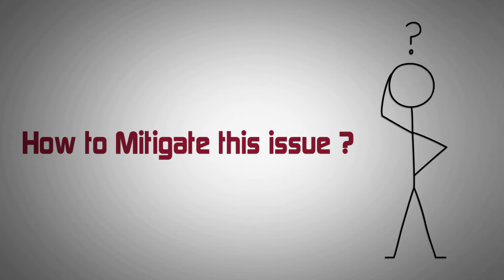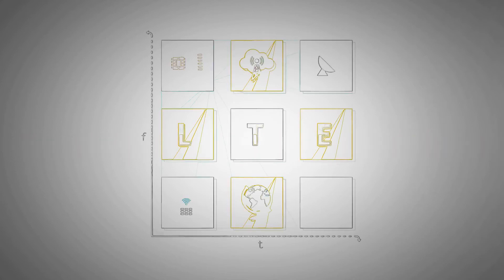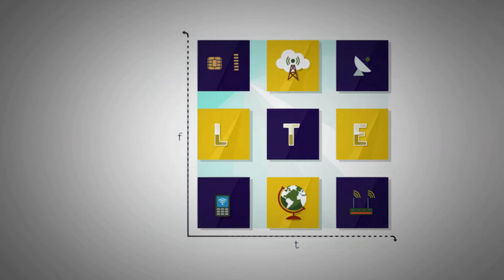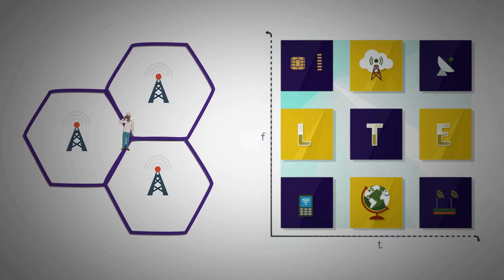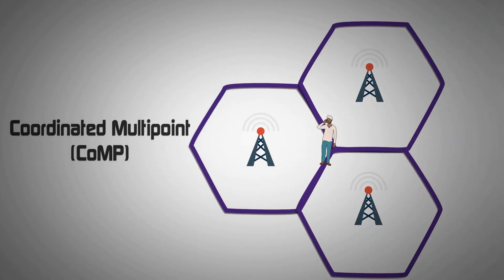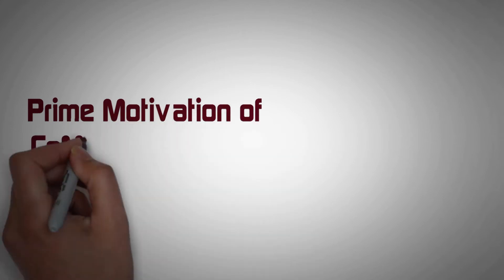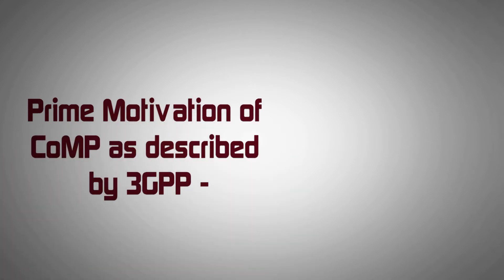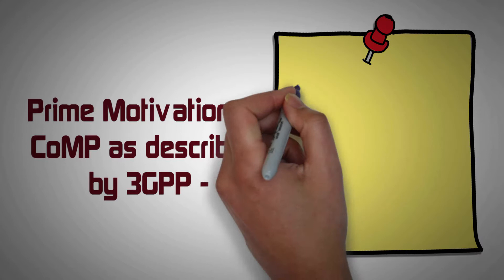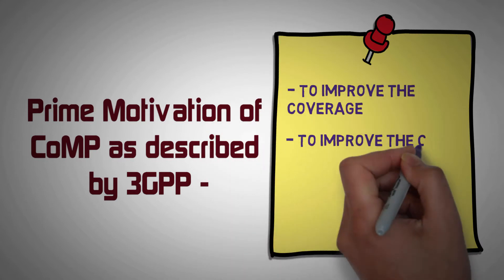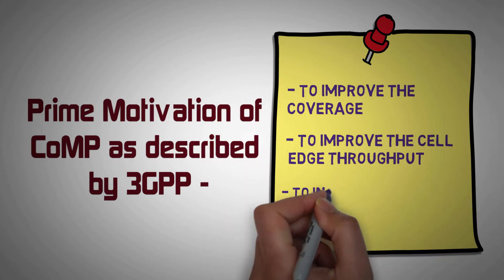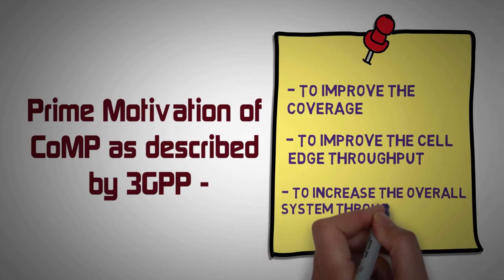So what did the operators come up with to mitigate this issue? Welcome back to the fundamentals of LTE. Today we will see how using multipoint coordination, the user experience at the cell edge is improved by exchanging cell information among different base stations. The prime motivation of Coordinated Multipoint as described by 3GPP are to improve coverage, to improve cell edge throughput, and to increase the overall system throughput.